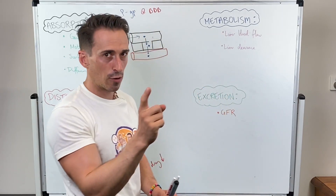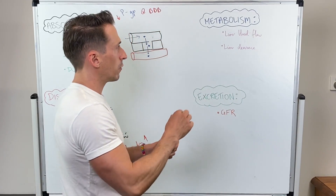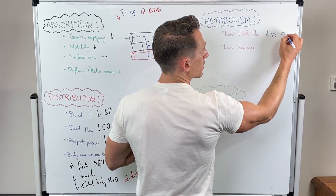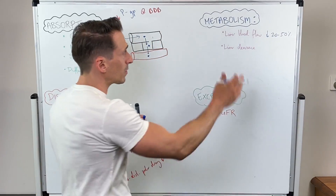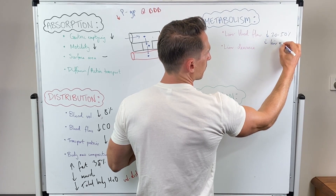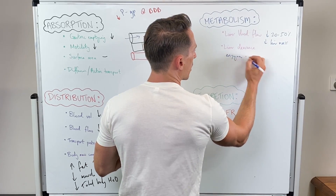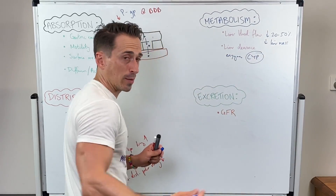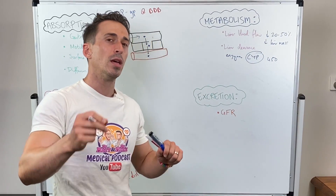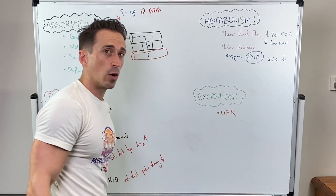The two major considerations for liver metabolism are blood flow to the liver and hepatic clearance. For the older person, hepatic blood flow is significantly reduced by 20 to 50%, and liver mass is also reduced. Regarding hepatic clearance, a major group of enzymes involved is the CYP family — cytochrome P450 — which are important for xenobiotic metabolism and detoxification of potentially toxic compounds. CYP enzyme activity is known to be reduced in the older person.